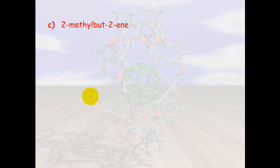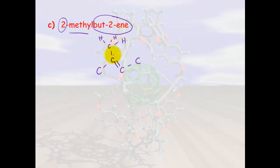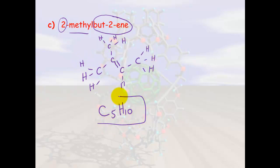For 2-methylbut-2-ene: 'but' indicates four carbons, '2-ene' means there's a double bond on position two, and on position two we also have a methyl group. Draw the four-carbon chain with the double bond, add the methyl group on carbon two, and fill in the remaining hydrogens. The molecular formula is again the same as the previous two examples — making it another structural isomer.